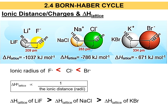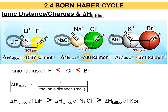For this next example, we have three different ionic compounds: LiF, NaCl, and KBr. Each has a different lattice energy. As usual, when comparing lattice energies, ignore the negative sign and look at the magnitude — the numbers. The magnitudes are: LiF = 1037, NaCl = 786, KBr = 671.